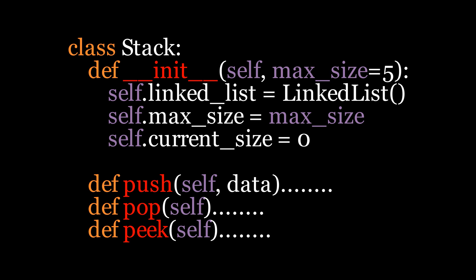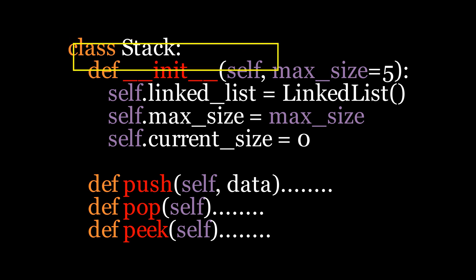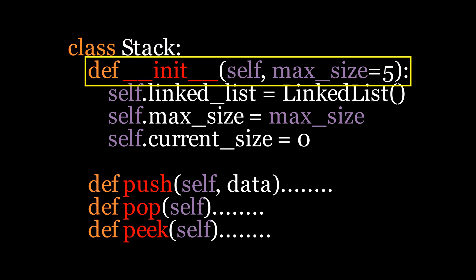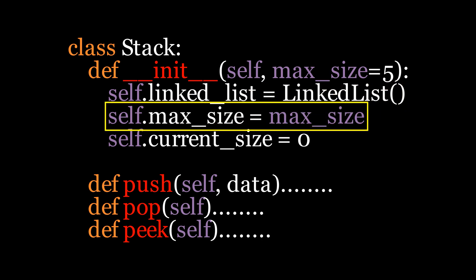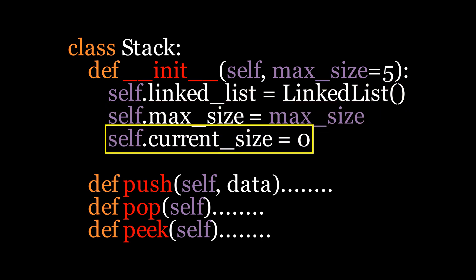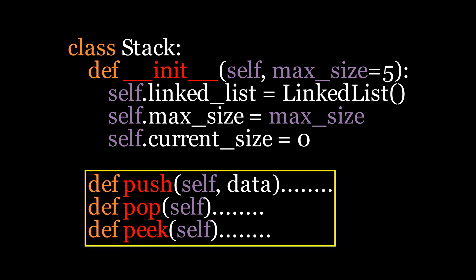We'll start by defining the Stack class. In the constructor, we'll set a default size of 5, though this is optional. Then we'll initialize a linked list to store the stack elements, set the maximum size, and keep track of the current size. After that, we'll define all the stack operations — such as push, pop, and peek — to work with this linked list implementation.